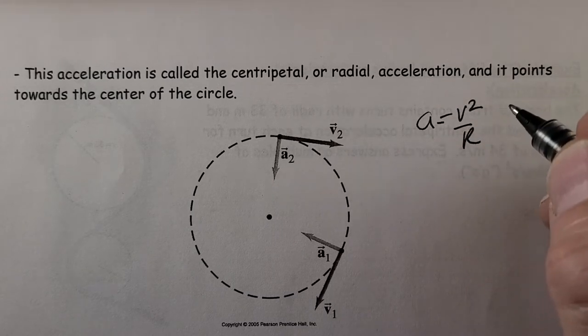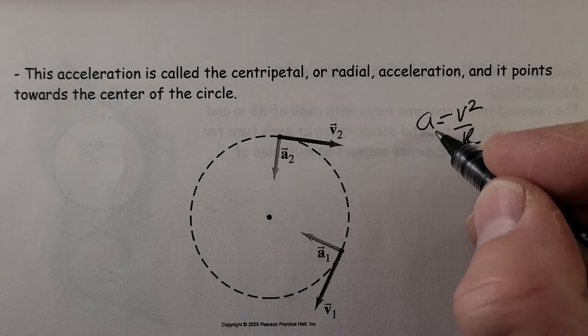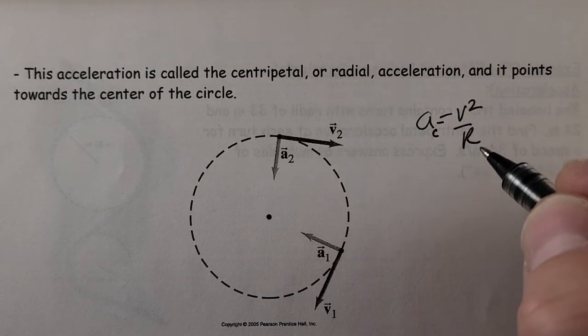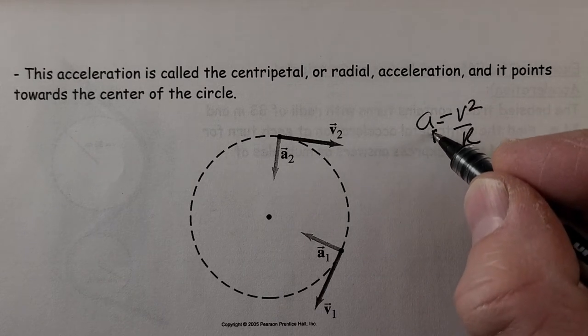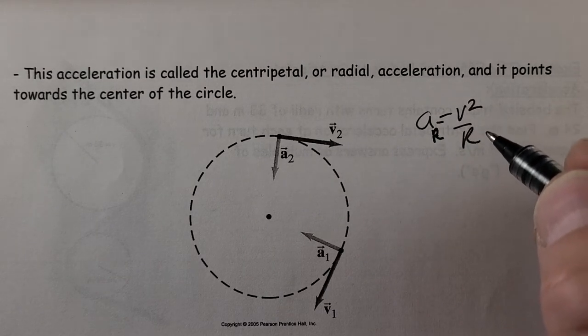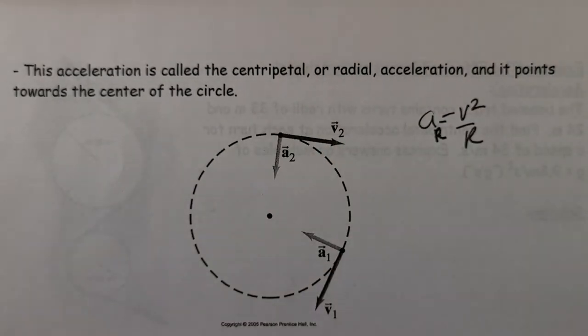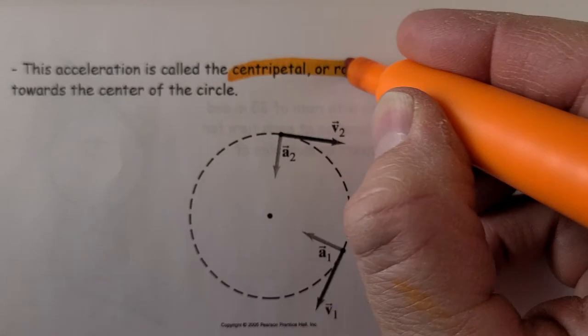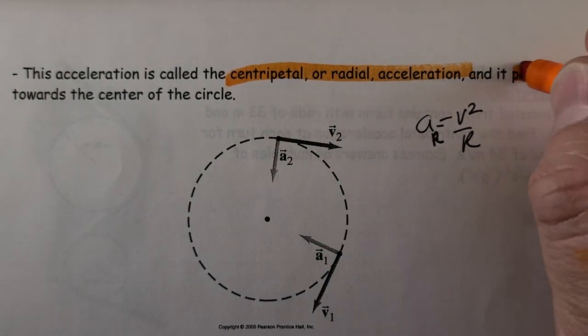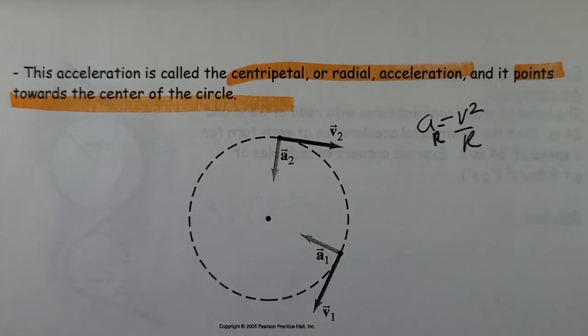We derived how we came up with V squared, and we call that AR for radial, or sometimes it's referred to as AC for centripetal or radial acceleration. The key thing here is that it points towards the center.